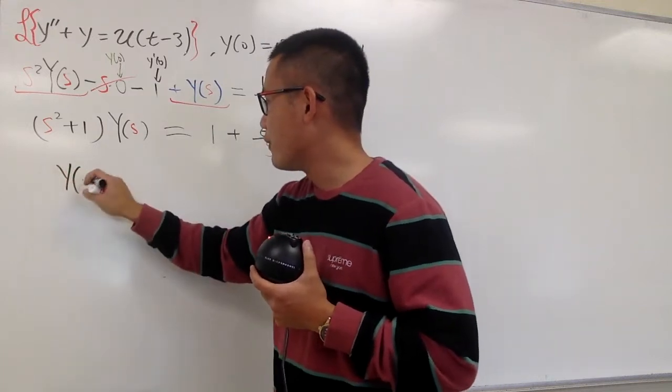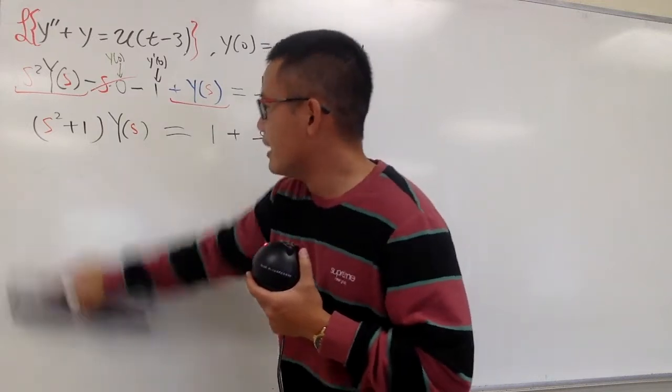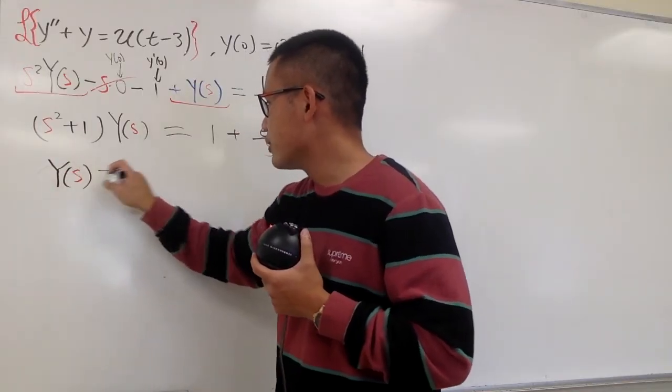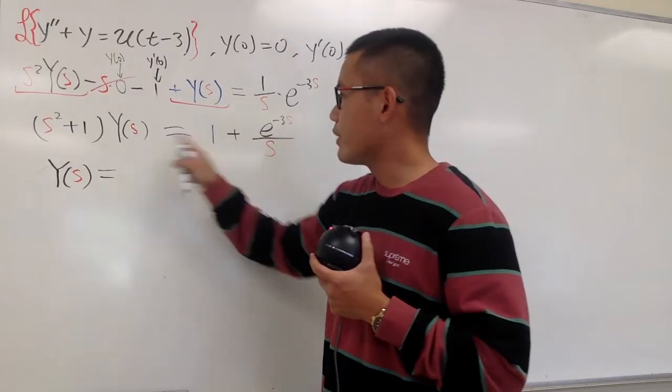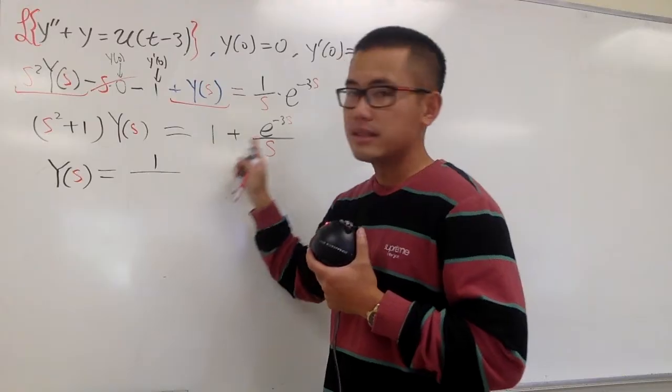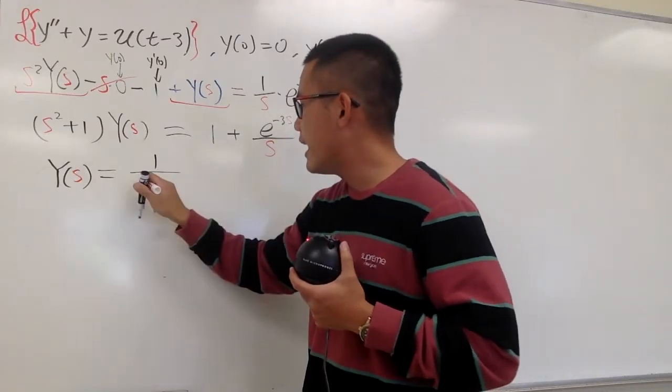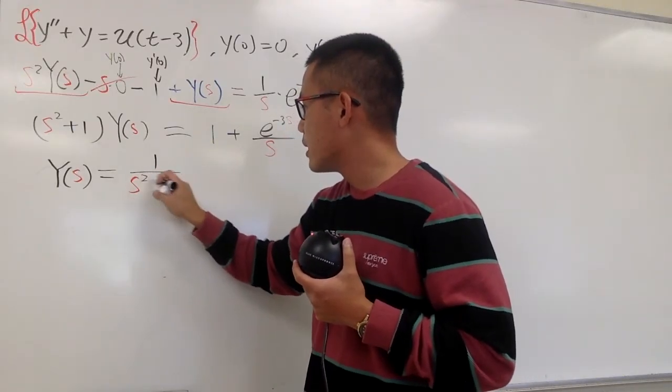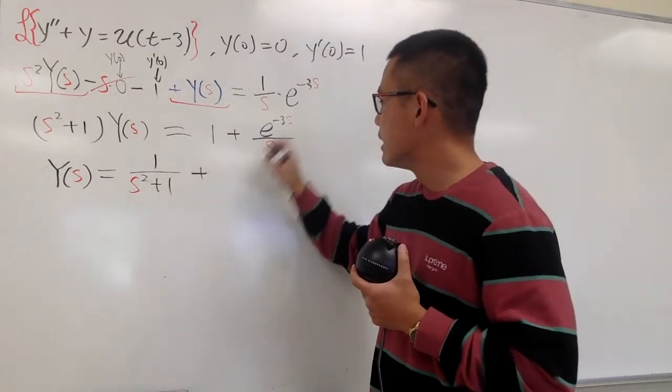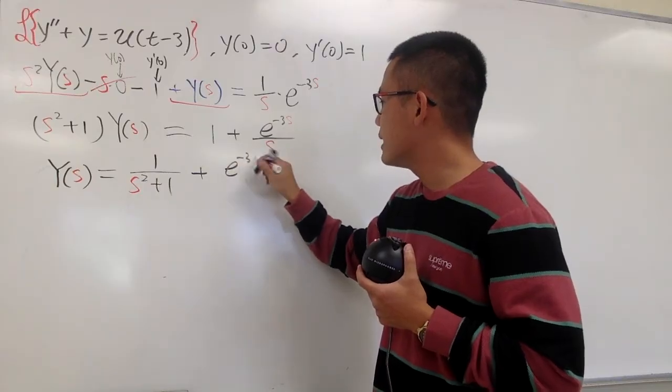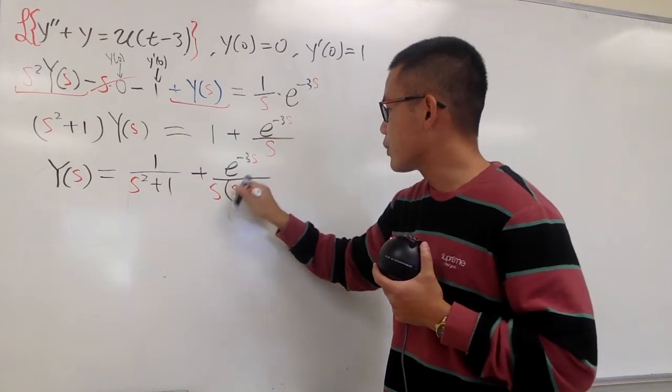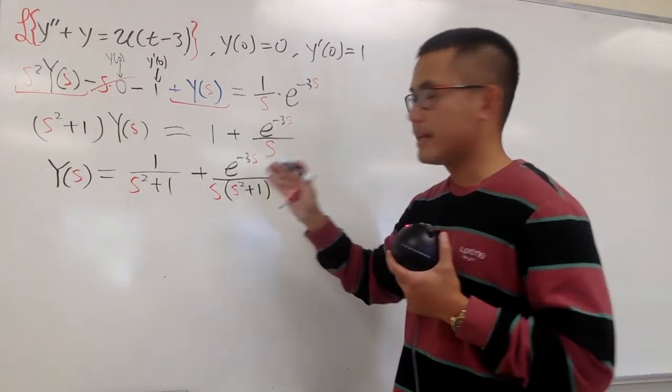At the end, you know, I have to divide everything by S squared plus 1. In another word, I will get Y of S. This is technically a capital Y, like this. Y of S is going to be, first, we have 1 over S squared plus 1. And I'm not going to combine the fractions, because this one doesn't have E to the whatever. So, 1 over S squared plus 1. And then, right here, we put down plus E to the negative 3S over S, and then we'll put this in the denominator, so we have the S squared plus 1, like that.